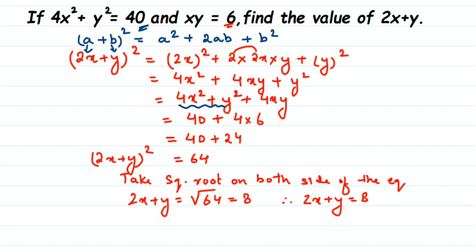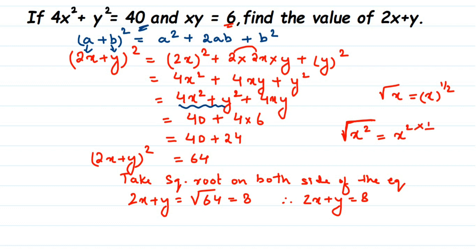Now, why do the square and square root cancel? The square root represents the half power — √x = x^(1/2). So when you have x² and take the square root, you get x^(2 × 1/2) = x^1 = x. That is what we did here: to remove the square, we took the square root on both sides of the equation. We must do it on both sides to keep the equation balanced, so the power of 2 and the square root's power of 1/2 cancel, giving us the value of 2x + y.